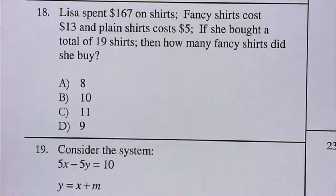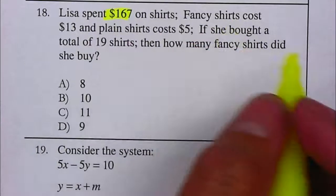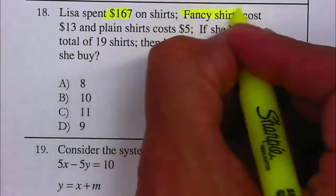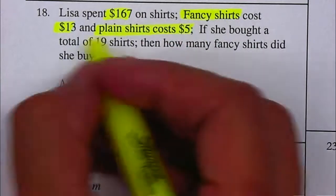In this case, we have $167 in total and we're going to have two items. We have fancy shirts at $13 and plain shirts at $5, and we have a total of 19 shirts.